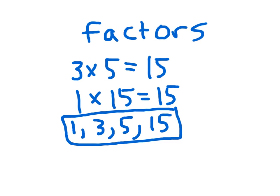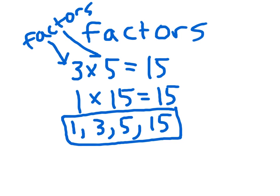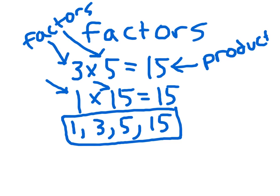If we look at our multiplication problem, each of these numbers in the multiplication problem are called factors — 3 is a factor, 5 is a factor. And that 15 is called the product. That's why 1, 3, 5, and 15 are the factors of 15. You'll notice I listed those factors in order.